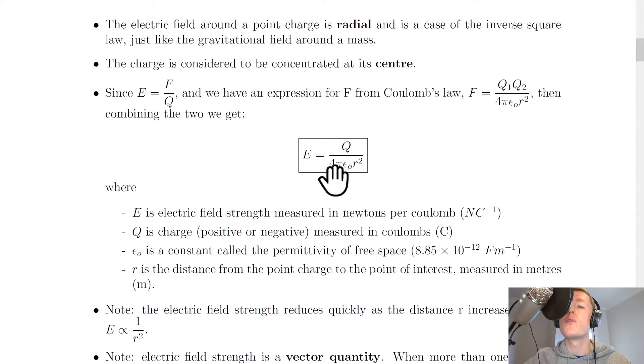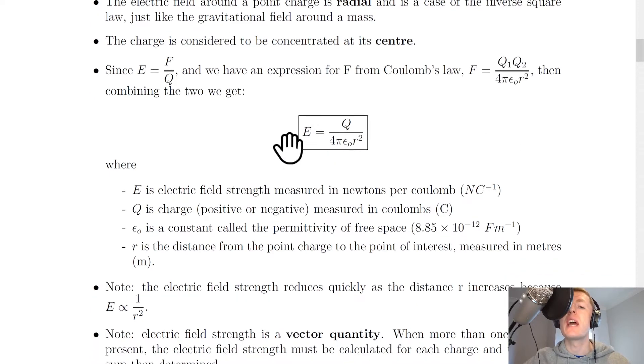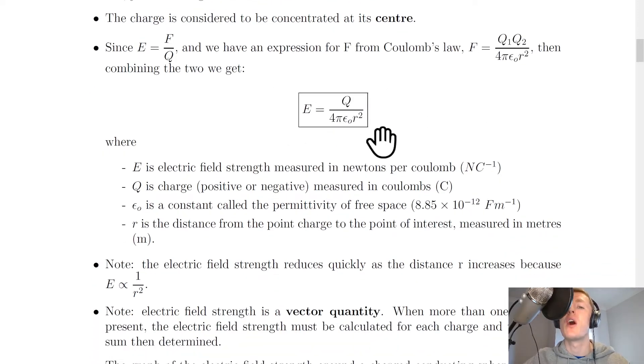That comes from E equals F over Q, so we're essentially substituting this F into here, dividing this expression by Q. That gets rid of one of these Qs, and we're dropping one of the numbered subscripts. So we get E equals Q over 4 pi epsilon not R squared.